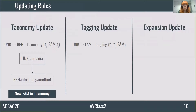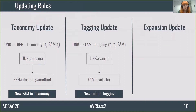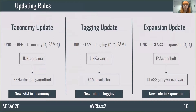An example of a rule which updates tagging is one that goes from an unknown to a family. This means that the unknown is an alias of the family — for instance, from Xworm to Love Letter. This rule, which replaces Xworm by Love Letter, will be included in the tagging rules. There are updates in the expansion file too. An example is from a family to a class, like Leadbolt which is an adware. After running the update module, the new rule from Leadbolt to Adware could be included in the expansion rules.